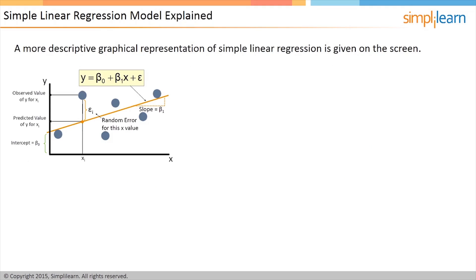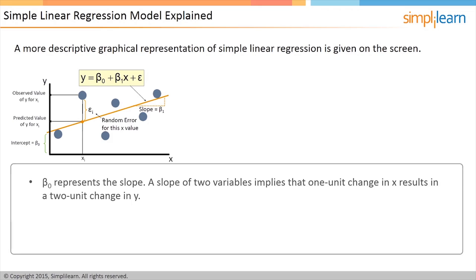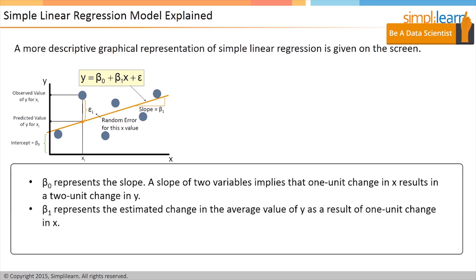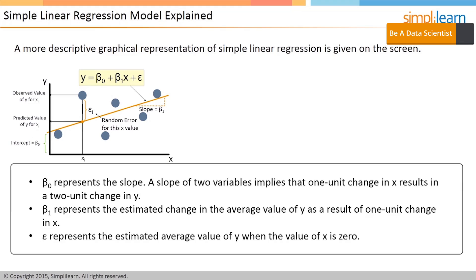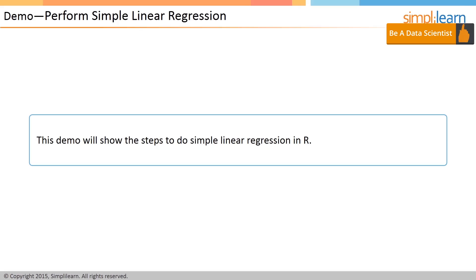A more descriptive graphical representation of simple linear regression is given on the screen. Beta naught represents the slope — a slope with two variables implies that one unit change in X results in a two unit change in Y. Beta 1 represents the estimated change in the average value of Y as a result of one unit change in X. Epsilon represents the estimated average value of Y when the value of X is zero.